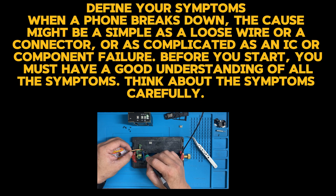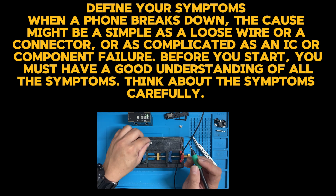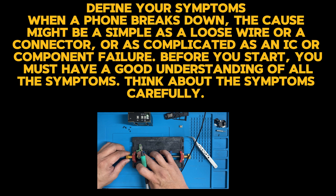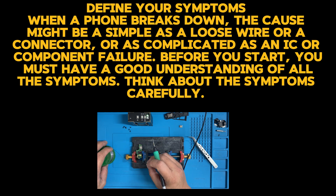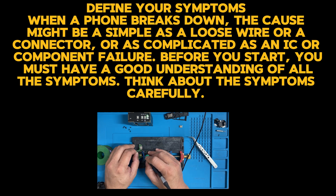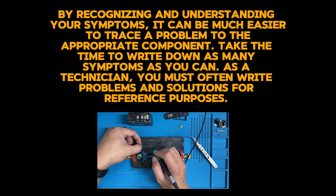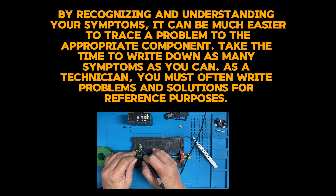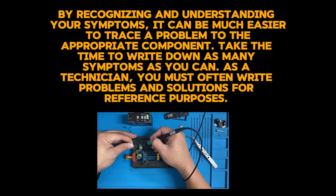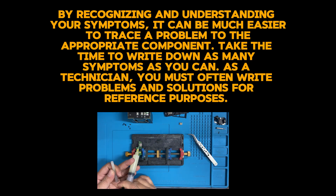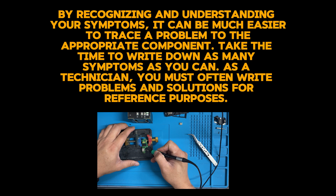When a phone breaks down, the cause might be as simple as a loose wire or connector, or as complicated as an IC or component failure. Before you start, you must have a good understanding of all the symptoms. Think about the symptoms carefully. By recognizing and understanding your symptoms, it can be much easier to trace a problem to the appropriate component. Take the time to write down as many symptoms as you can. As a technician, you must often write down problems and solutions for reference purposes.